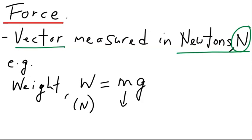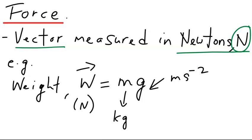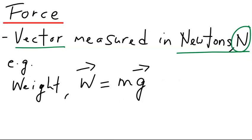Mass is measured in kilograms. G is the gravitational acceleration measured in the units of meters per second squared. The direction of weight, since weight is a force, is the same as the direction of the gravitational acceleration, which is downward.